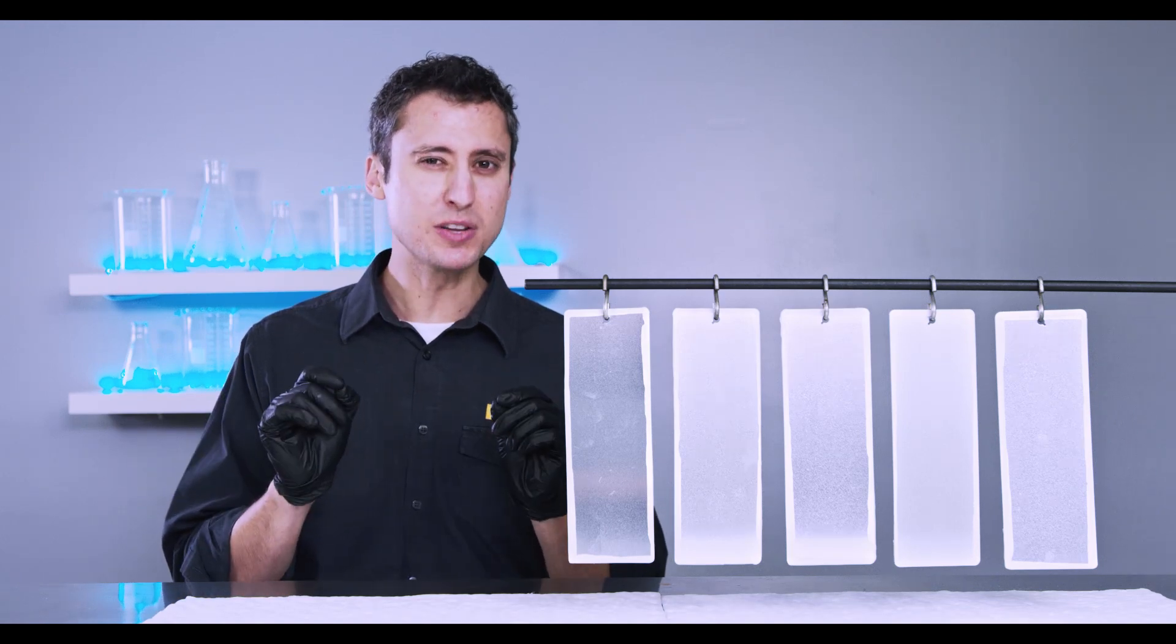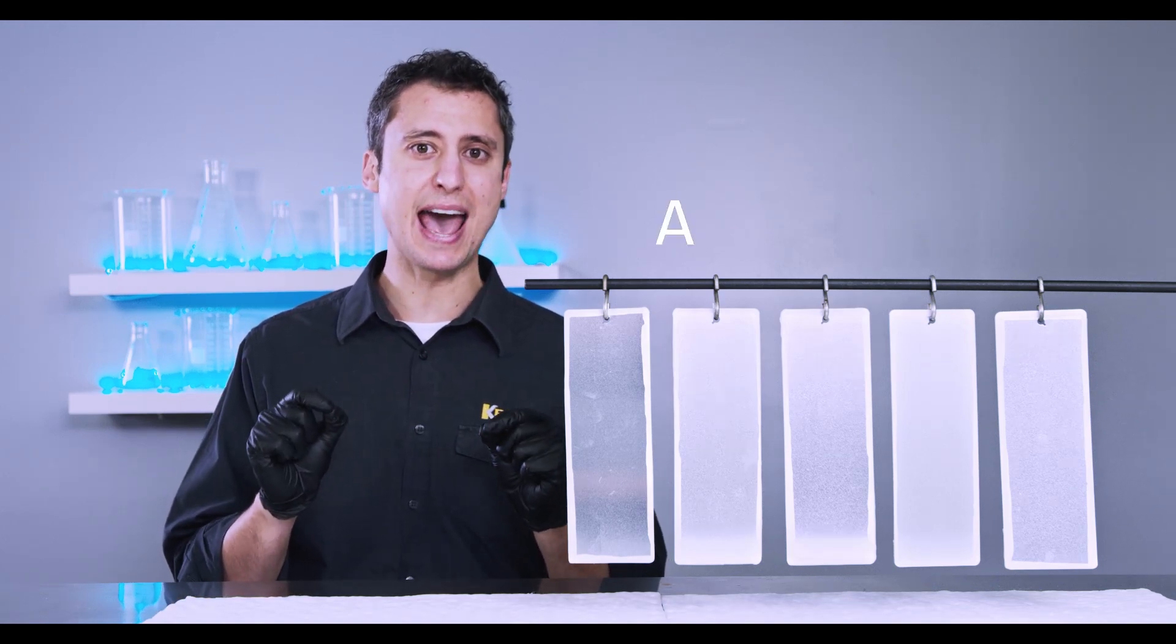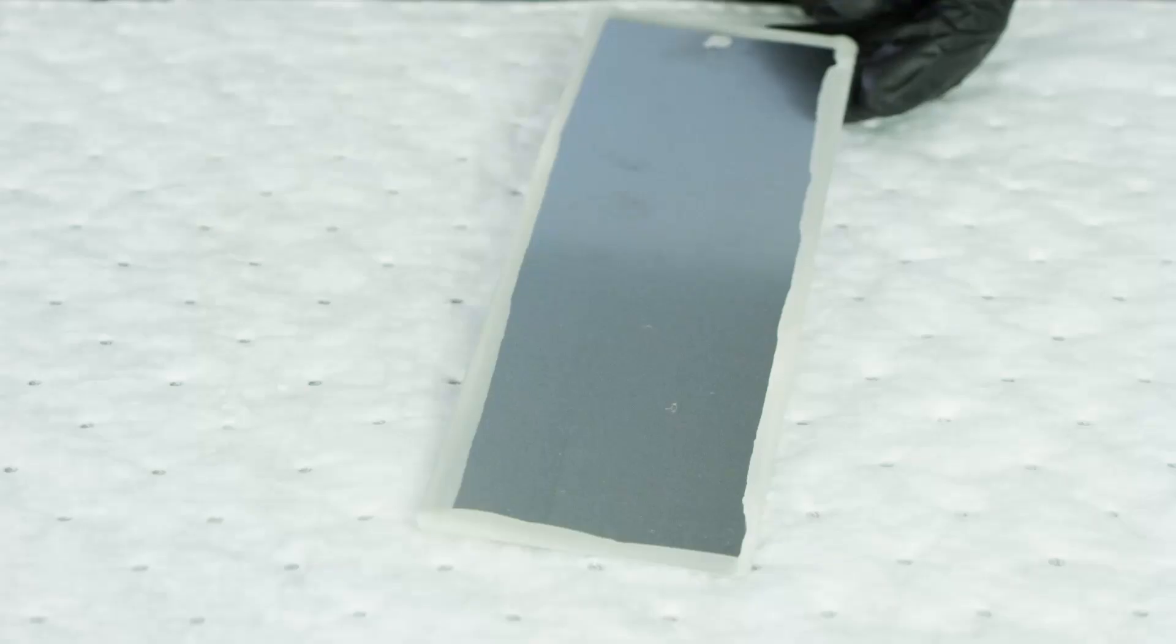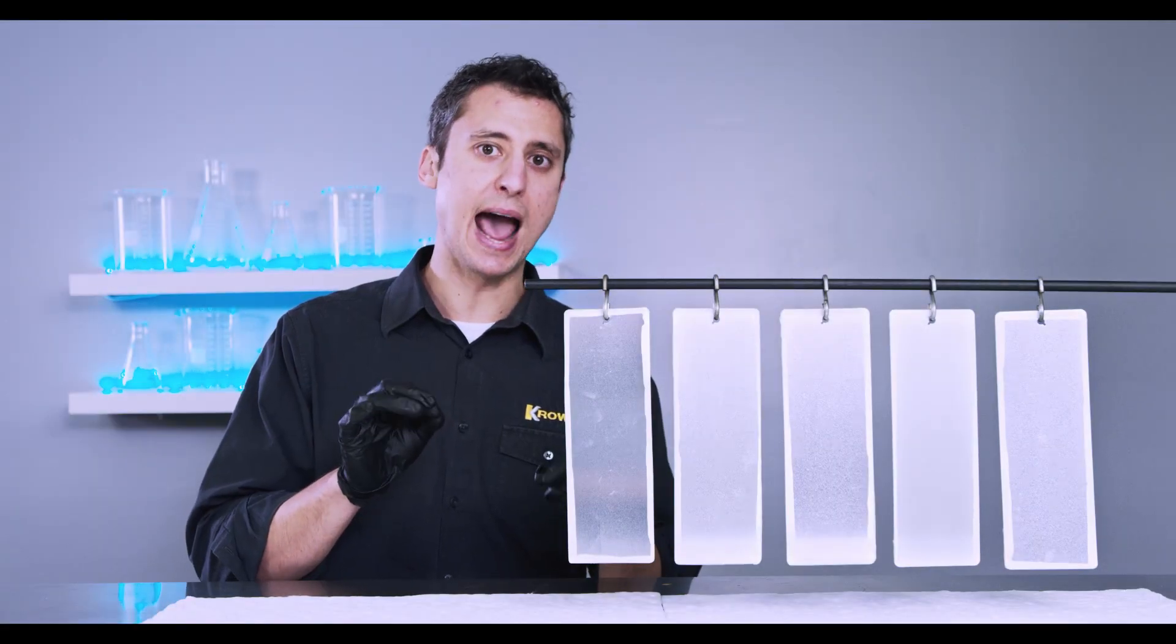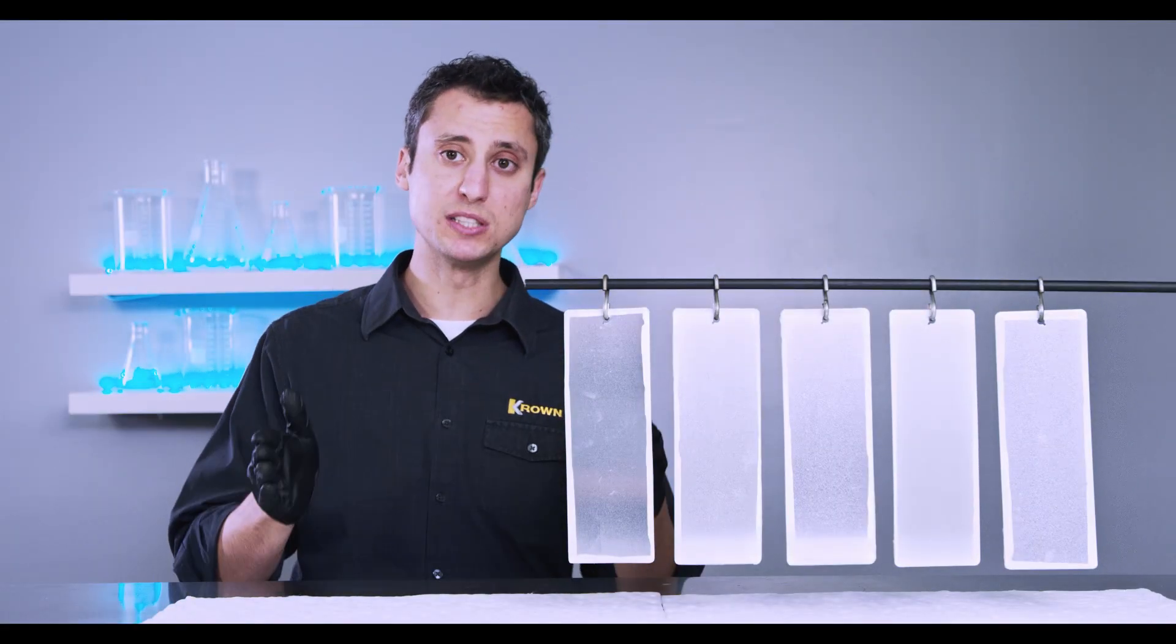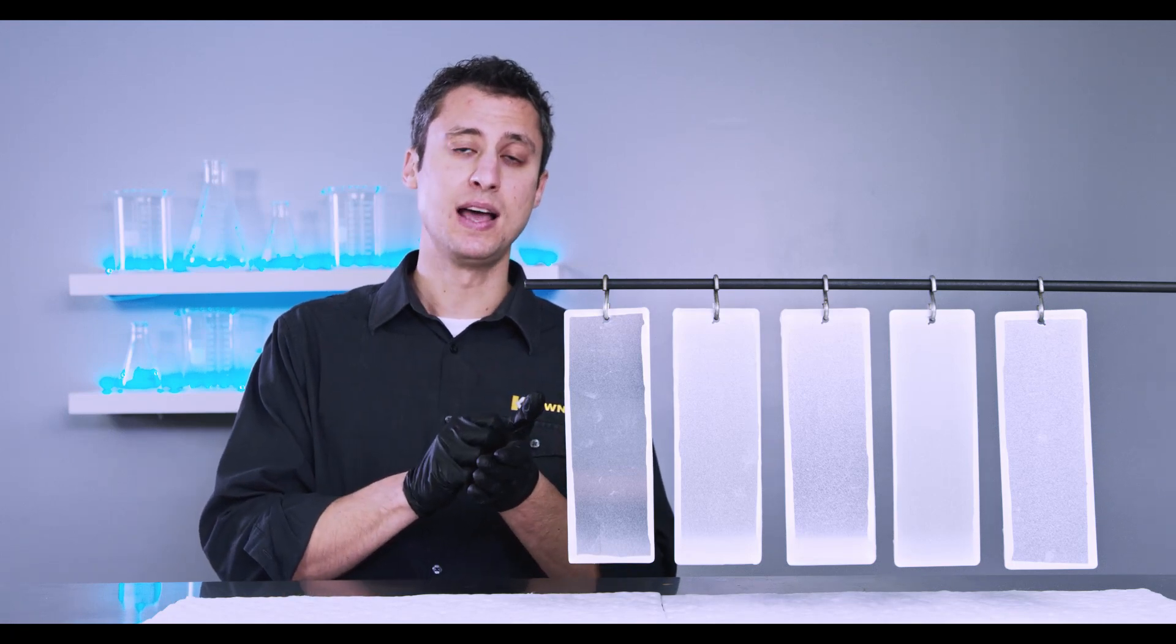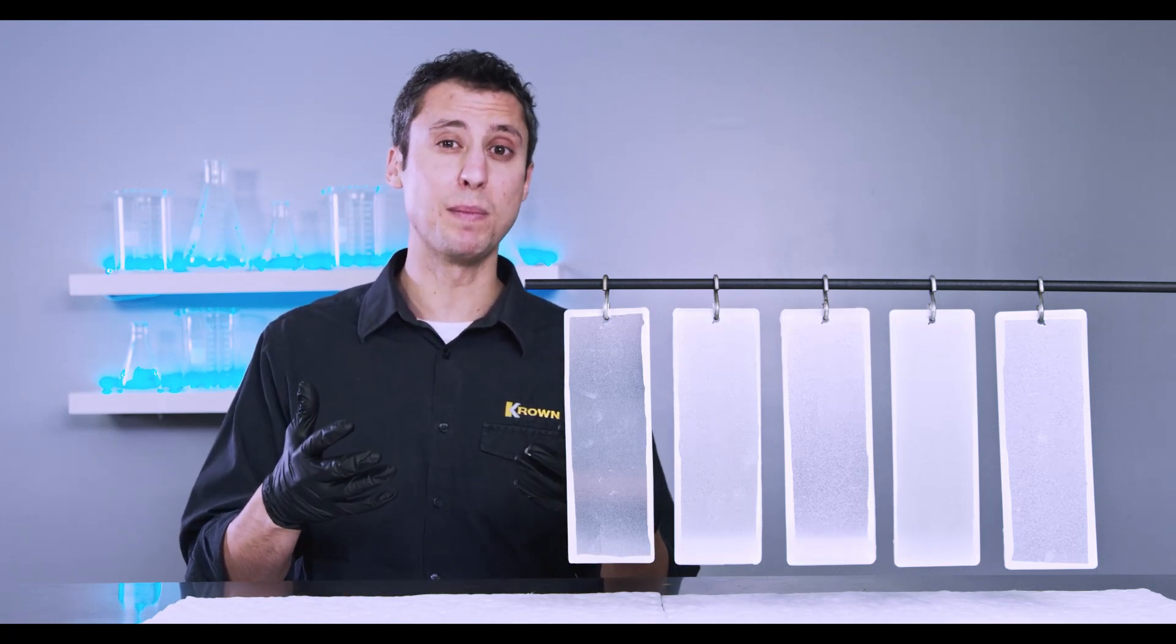To make sure that we meet the specifications of the ASTM B117 test, you'll notice that we have applied a hardened wax to the edges of the metal and what this does is it actually prevents any sort of corrosion that could form on the edges from bleeding onto the surface of the metal and therefore potentially compromising the results.